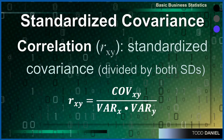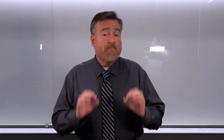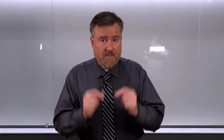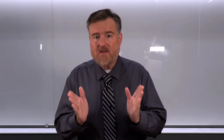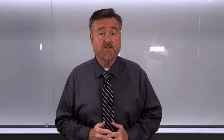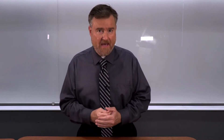Correlation is standardized covariance. We divide the covariance of x and y by the product of the standard deviation of x and the standard deviation of y. This math makes correlation a value that will range between negative 1 and positive 1 — we have standardized our covariance, the degree to which two variables move together.